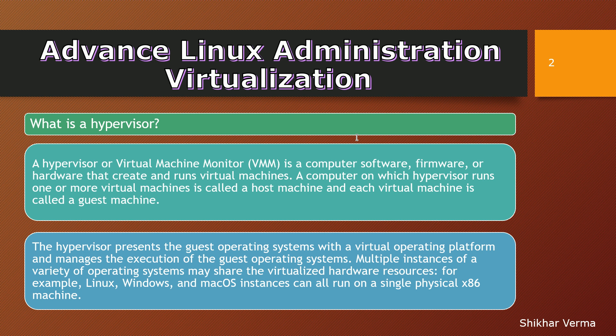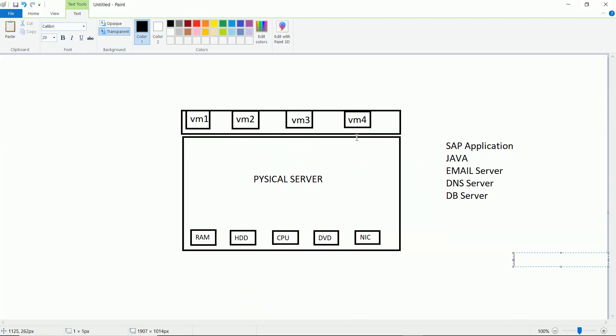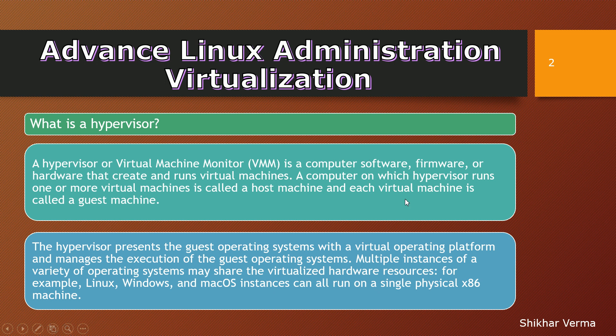The computer on which the hypervisor runs one or more virtual machines is called the host machine. The physical server on which we install VMs is our host machine. Each virtual machine running on that host is called a guest machine. So the key terminology is: physical server = host machine, and VMs = guest machines.